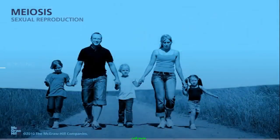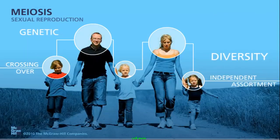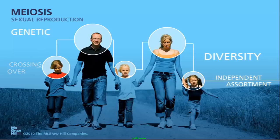The combination of independent assortment, crossing over, and the random pairing of gametes during sexual reproduction increases genetic diversity and explains why a child will not look exactly like his or her parents or siblings.